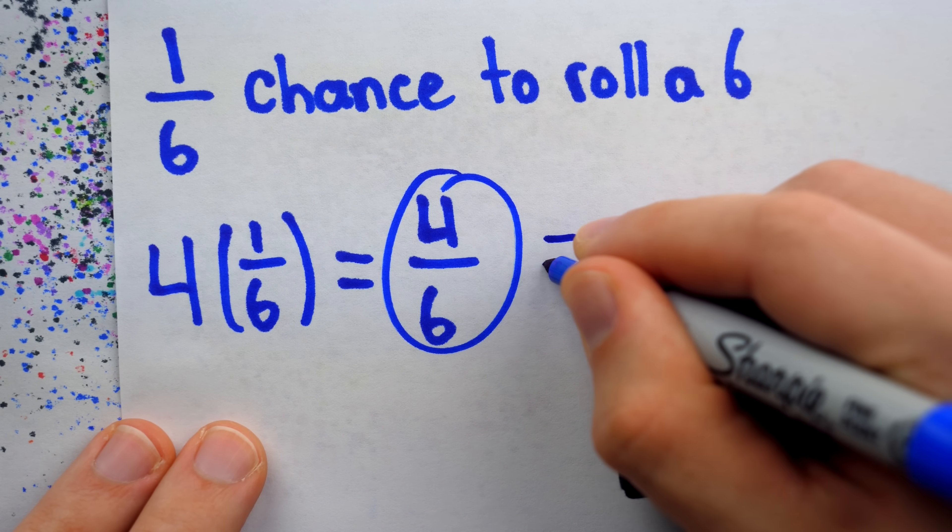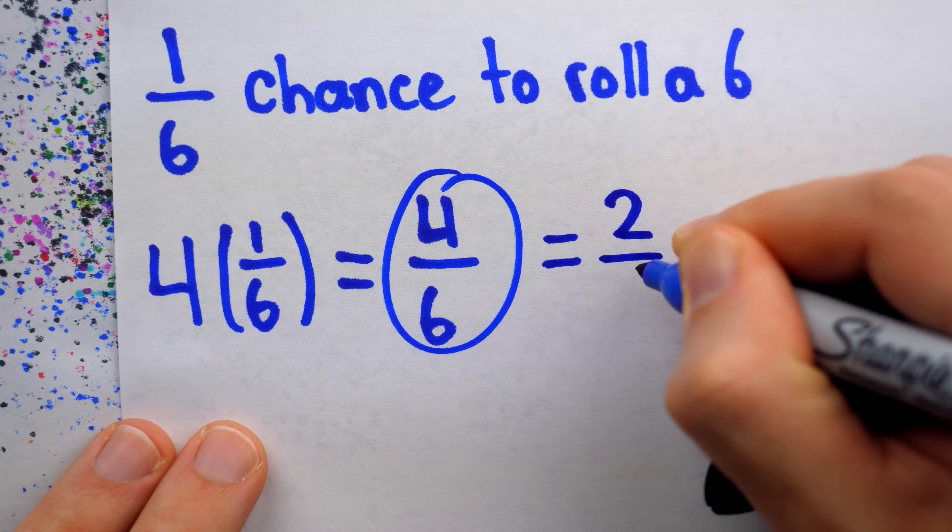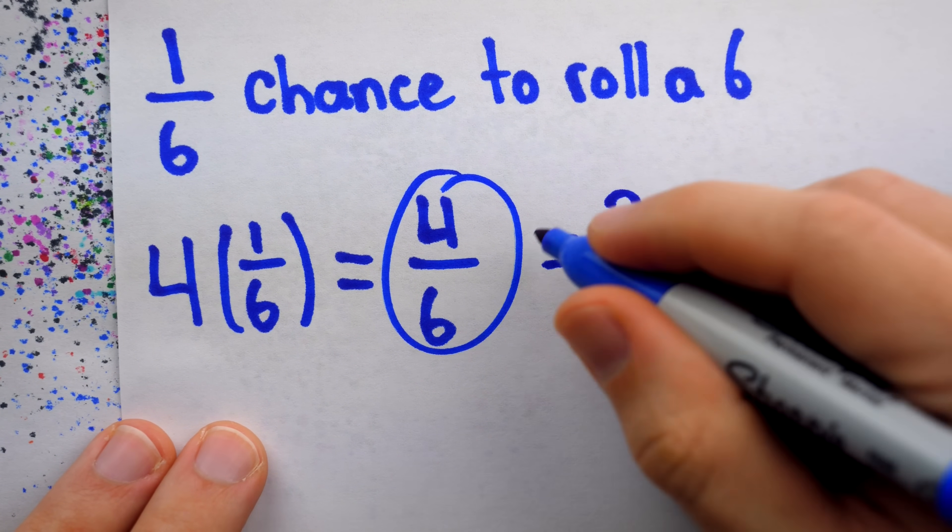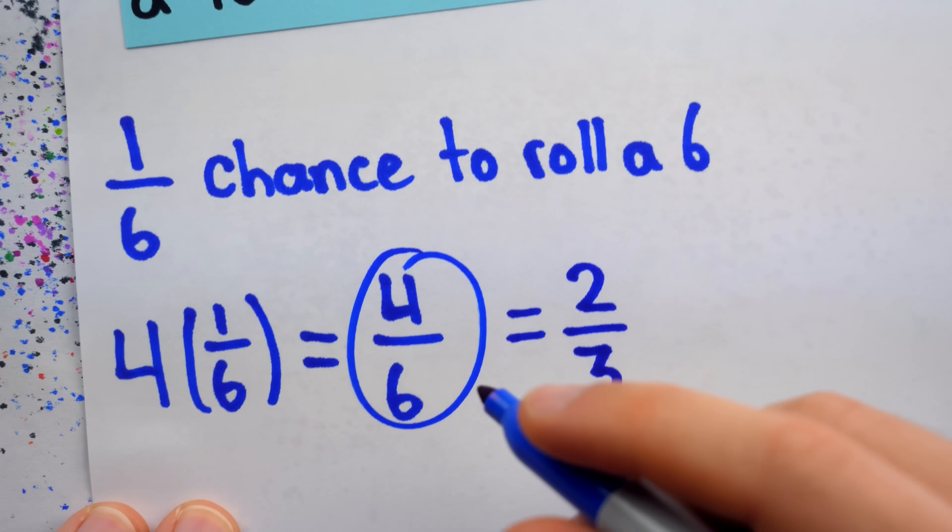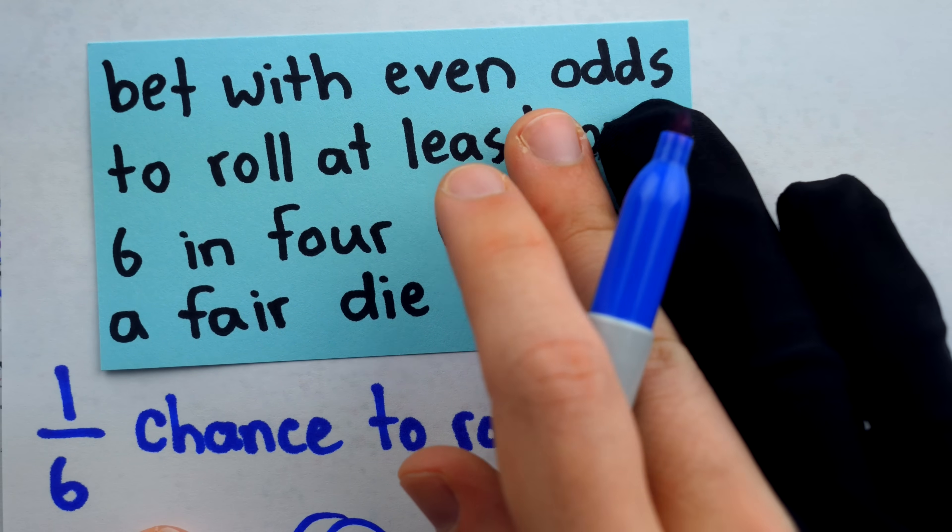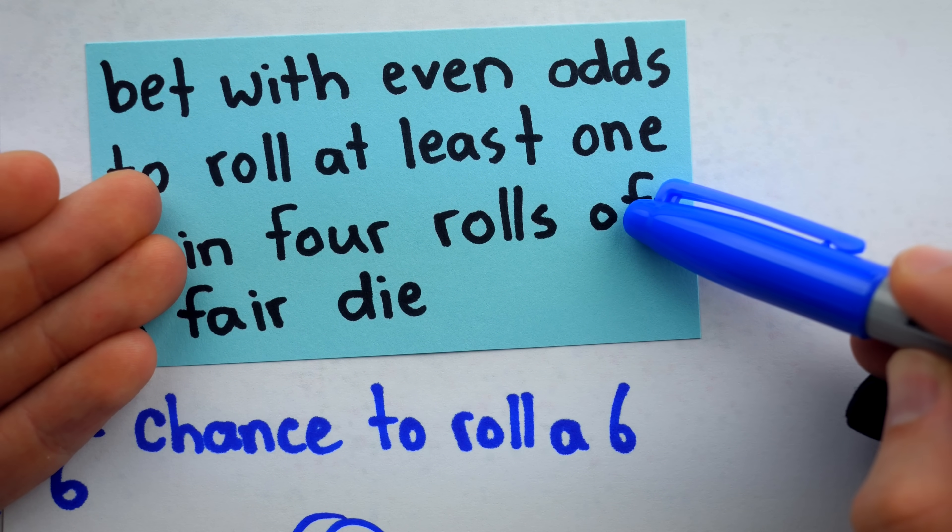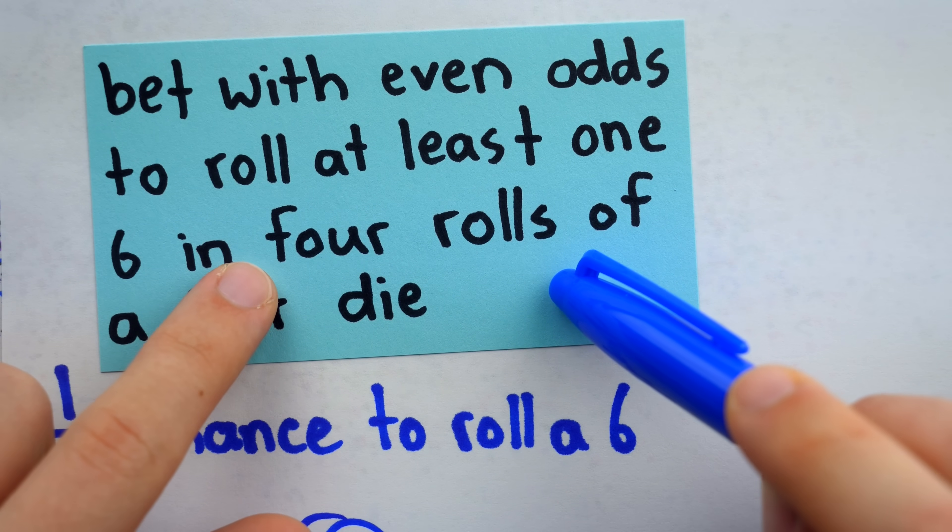Thus, he concluded his likelihood of winning was four out of six, or two-thirds. The odds are in his favor, and his personal experience bore this out. Playing this game repeatedly, he was able to make a considerable sum.